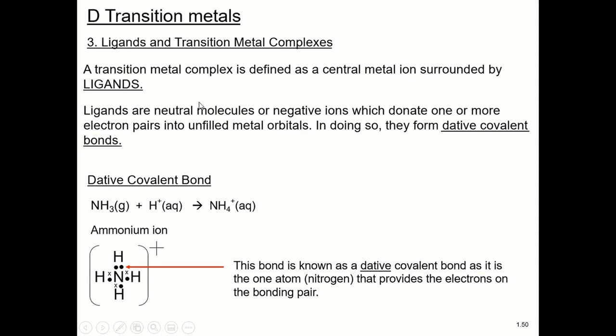Ligands are either neutral molecules or they may be negative ions, which can donate electron pairs into the metal orbitals, forming a dative covalent bond. We've met this term before, dative covalent bond, and that is when both electrons for that covalent bond come from the same source.